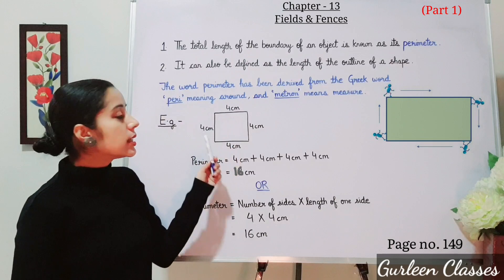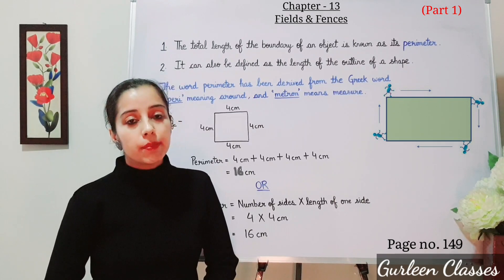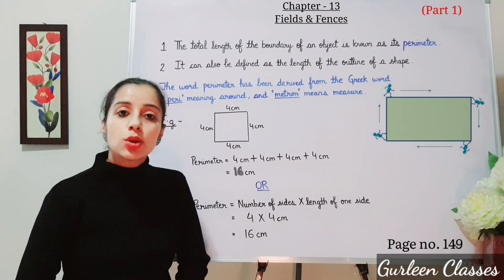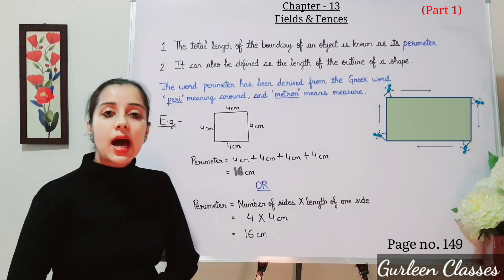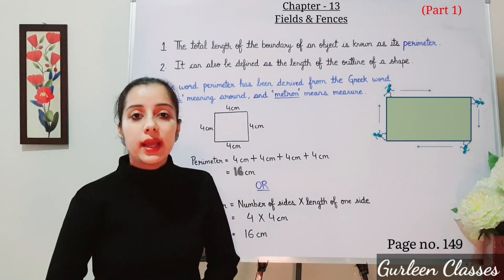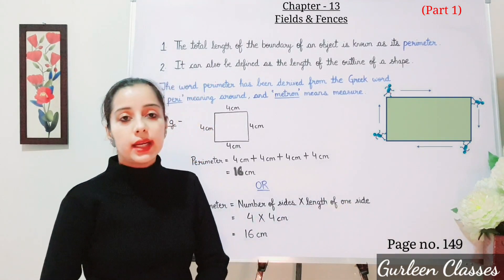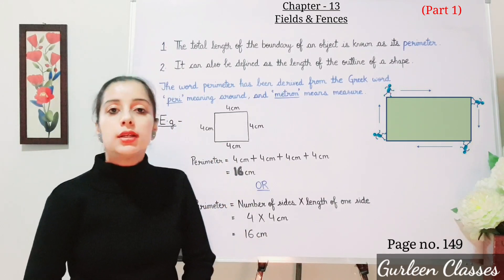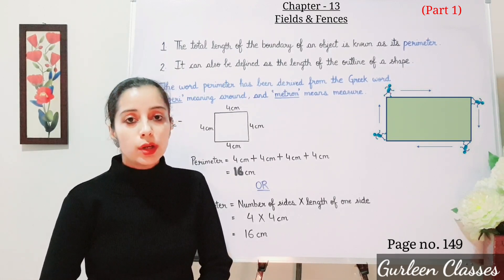Here you can see it is a square — a four-sided figure. It is a two-dimensional shape and has only length and breadth. The sides are given as four centimetres. Perimeter means sum of all the sides, so four plus four plus four plus four is sixteen centimetres. There is also a formula: perimeter of a square equals number of sides into length of one side — that is four into four, which is sixteen centimetres. So, perimeter of a square equals four into side.